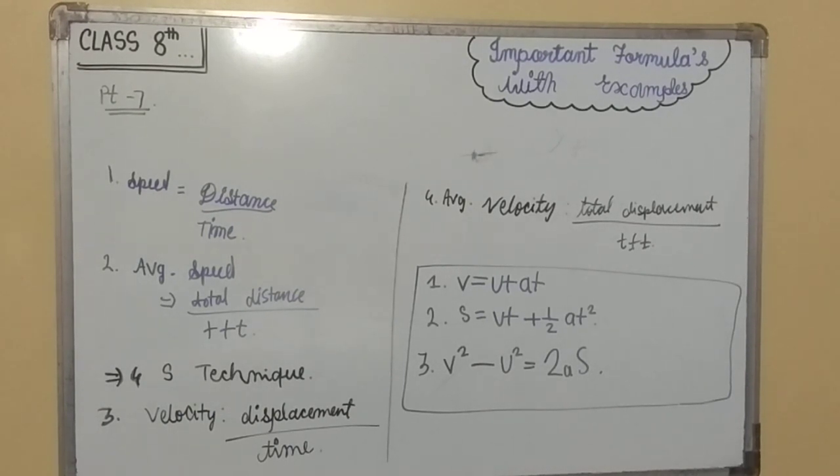Fifth point is, if body drops from a certain height, U will be equal to zero.